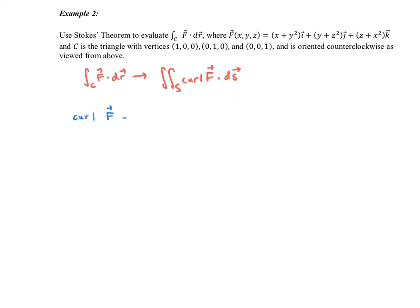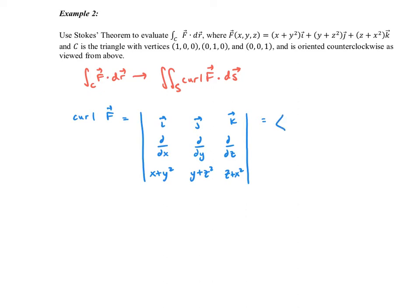Let's begin with just the curl of our vector F. I'm going to pause this and write out the curl. Here we have our cross product set up with the partial derivatives and our vector F, and we compute the cross product. What we get is negative 2z, negative 2x, and negative 2y — and that is curl F, which we're going to use in our equation.